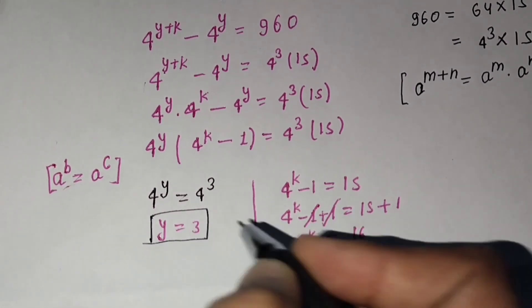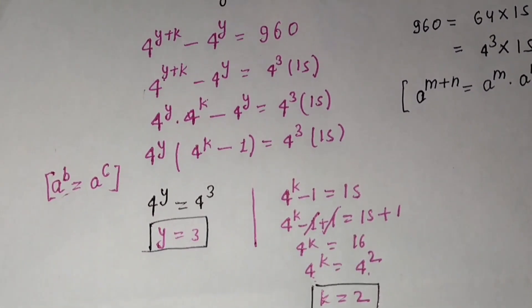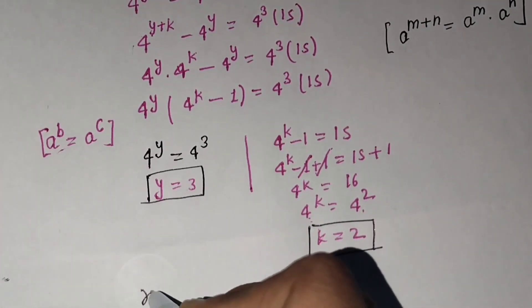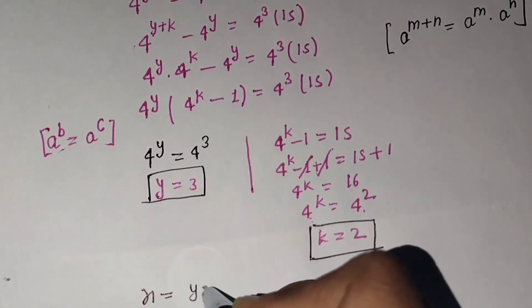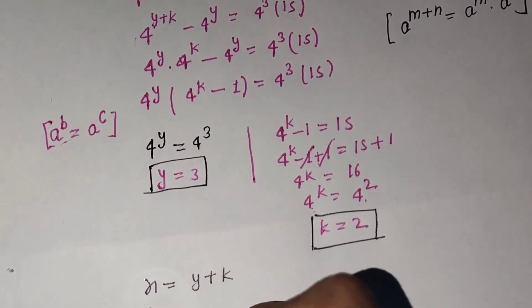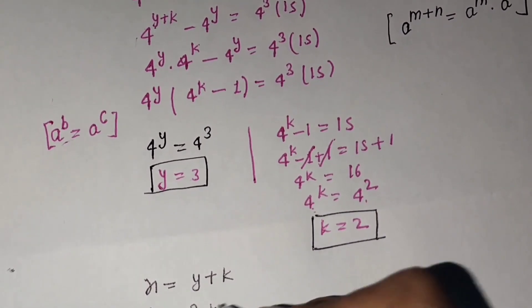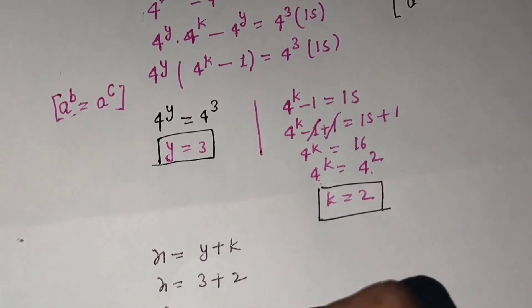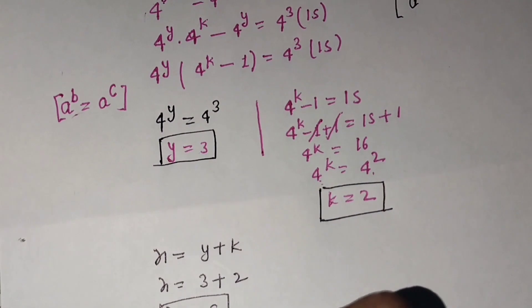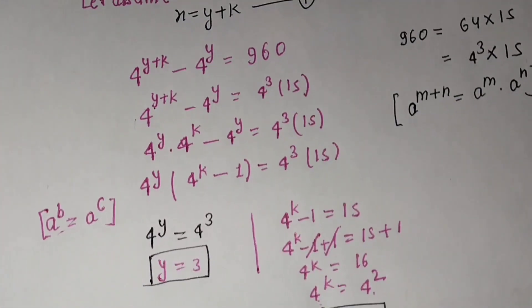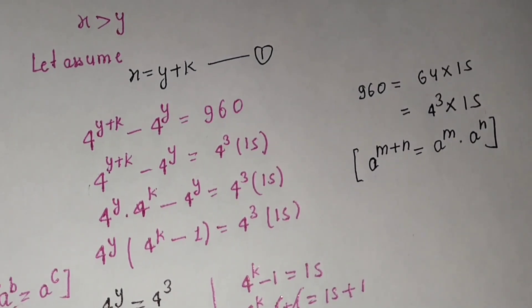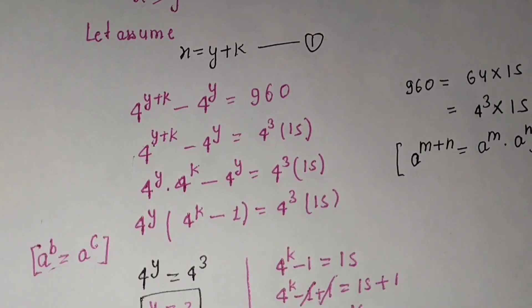Now y equals 3 and k equals 2. Putting these values into equation one: x equals y plus k equals 3 plus 2, so x equals 5. This is the answer. The given equation gives x equals 5 and y equals 3. If you enjoyed this video, please like, share, and subscribe. Bye!